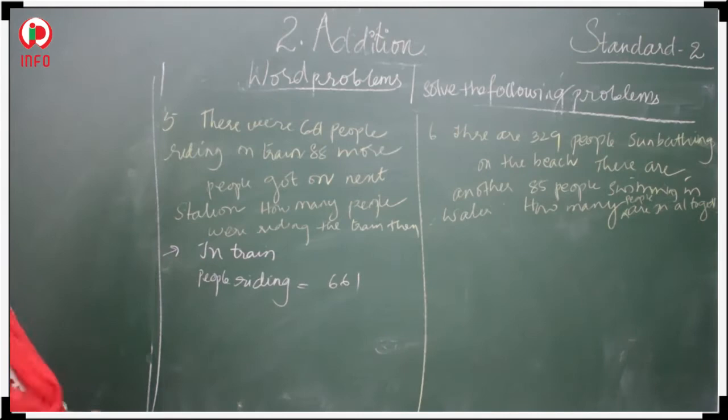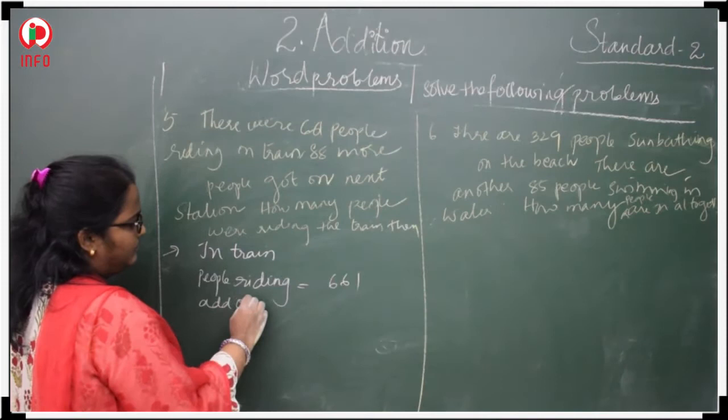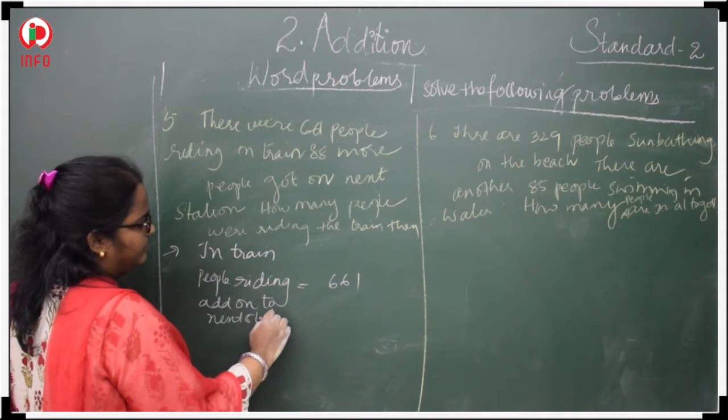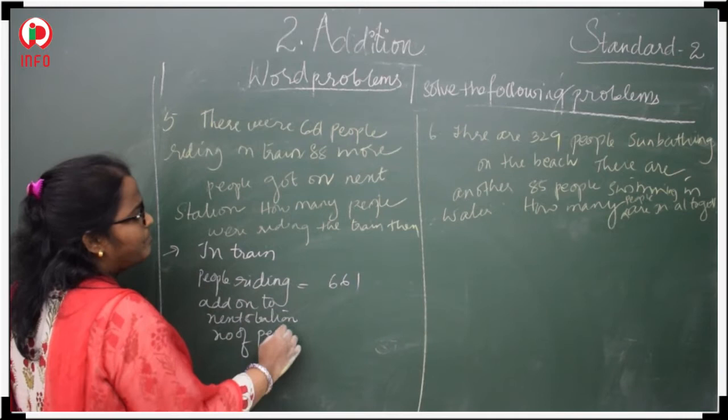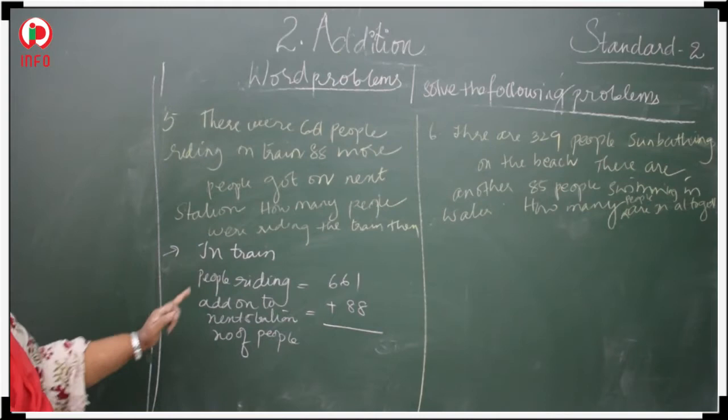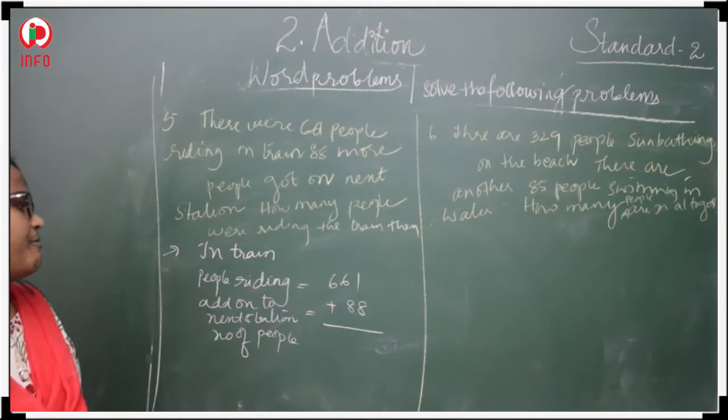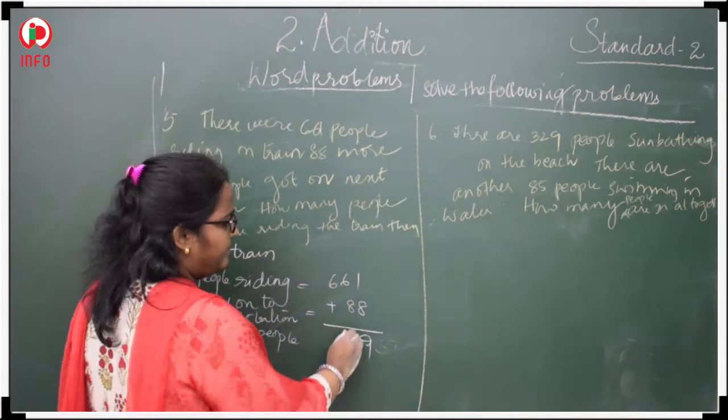Number of people added on to next station is 88. In train people riding is equal to 661, add on to next station. 8 plus 1 is 9. 6 plus 1 is 7.